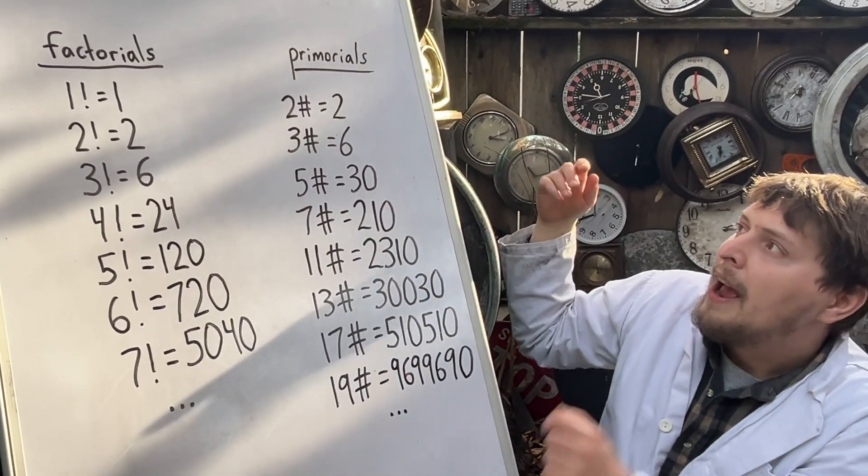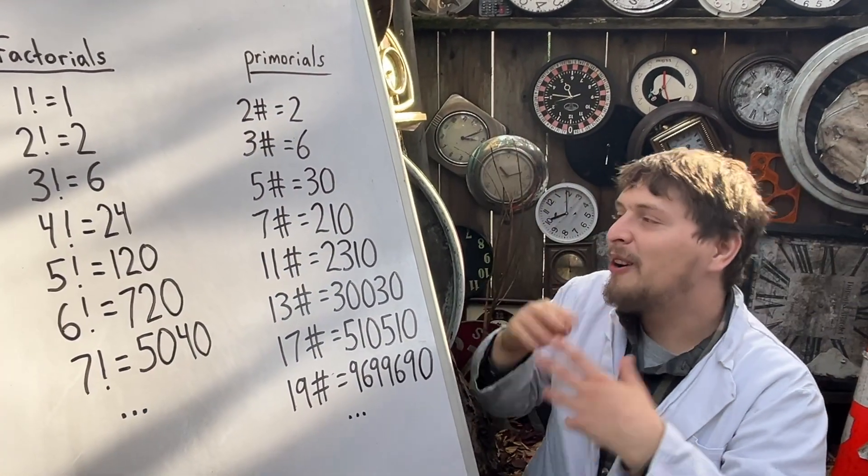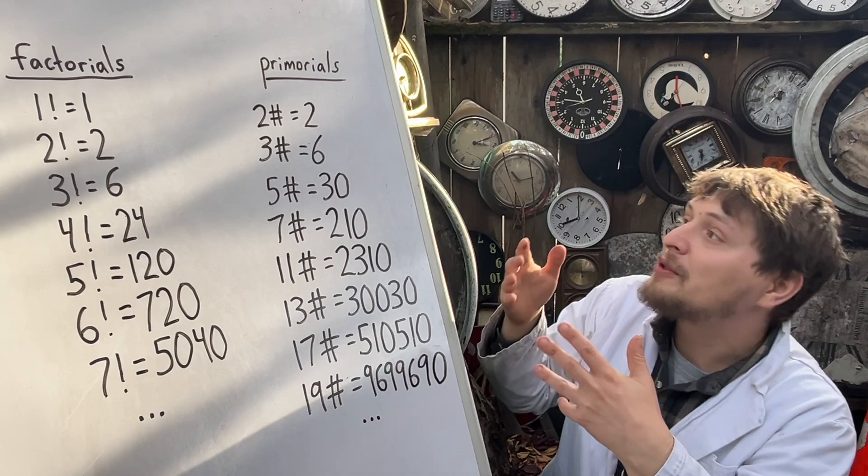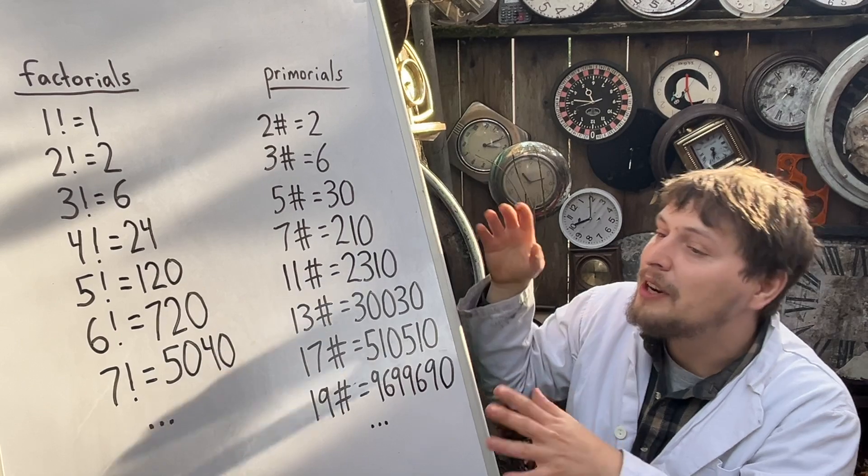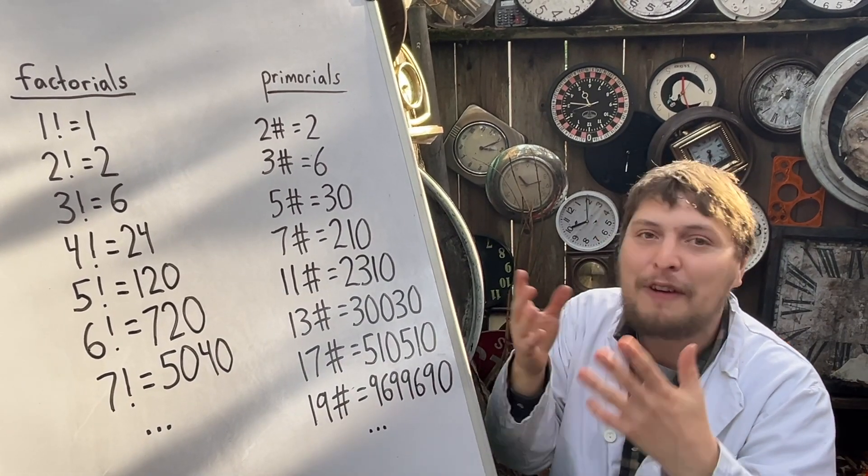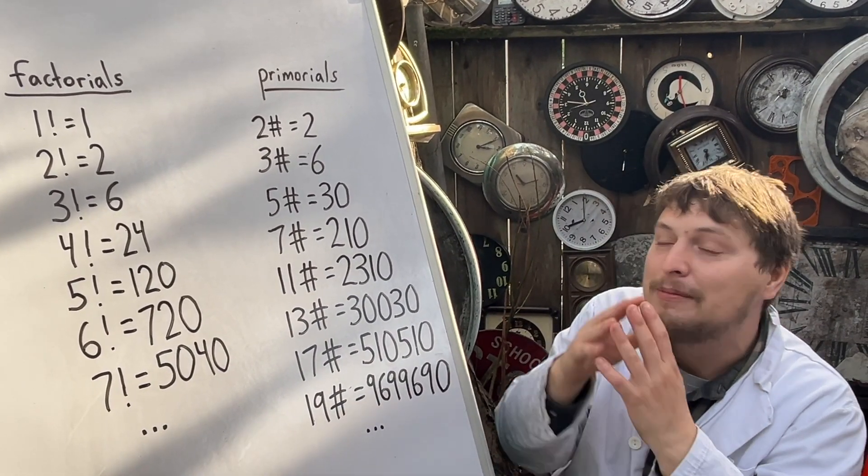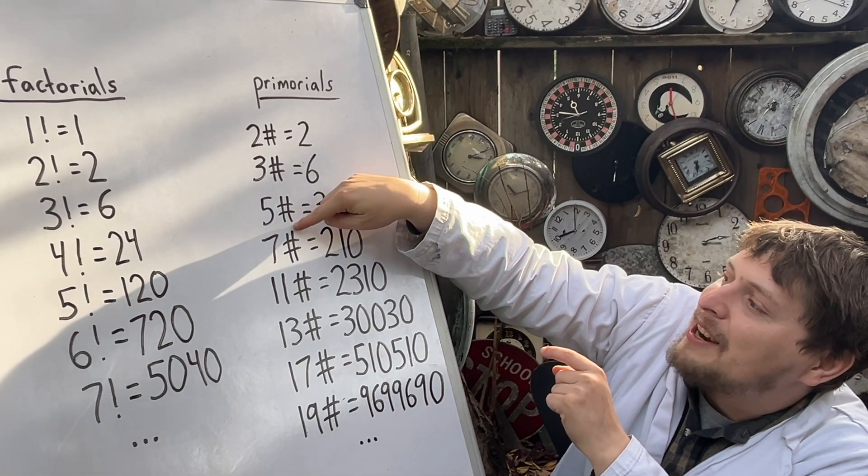And primorials are quite similar, but we just multiply the prime numbers up through some point, just including the numbers that's only factors are 1 and themselves. And if we go up to, for example,